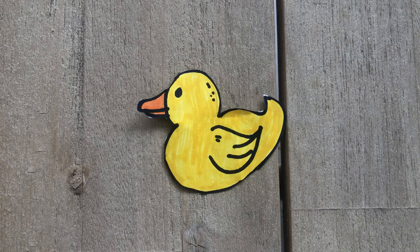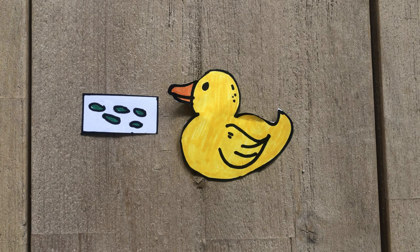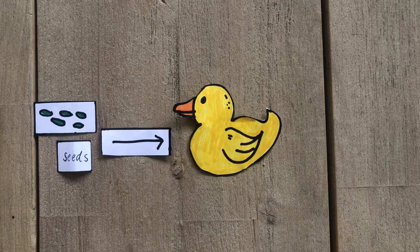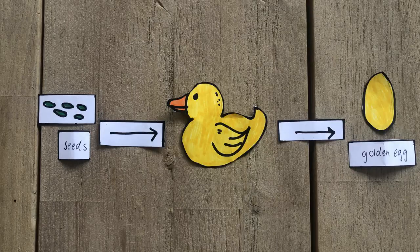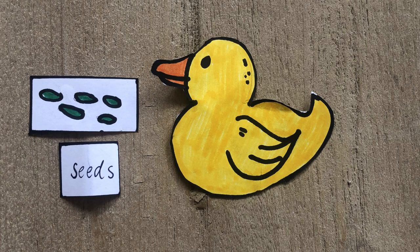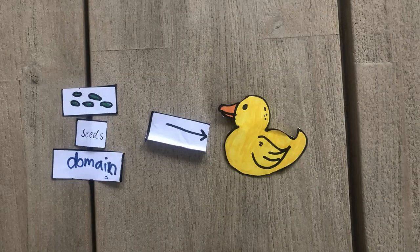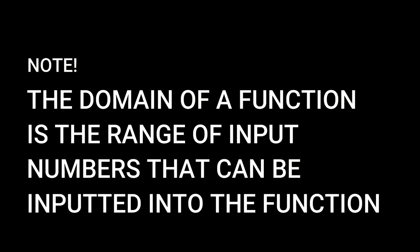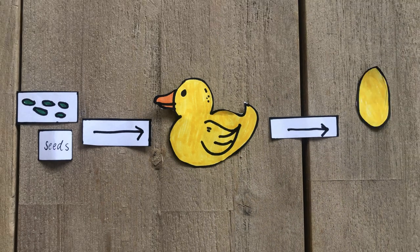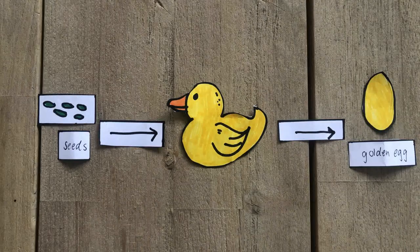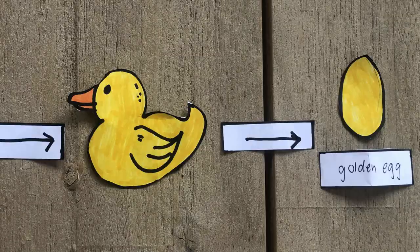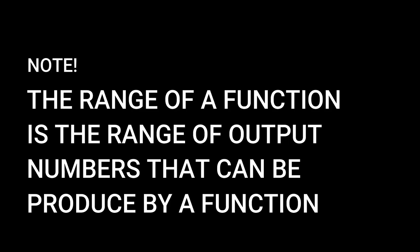But back to our friendly duck. Unfortunately, our little duck can only eat a specific number of seeds and therefore can only produce a certain number of eggs. The possible values for the number of seeds the duck can eat is called the domain of the function — it's the possible values of input numbers we can input into our function. Likewise, the possible values of the number of eggs is referred to as the range of the function — it's the range of output numbers the function can produce.